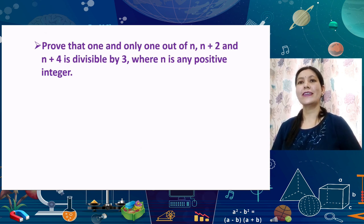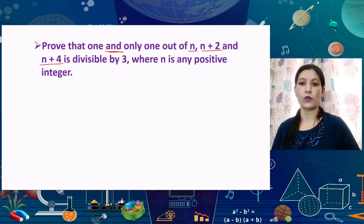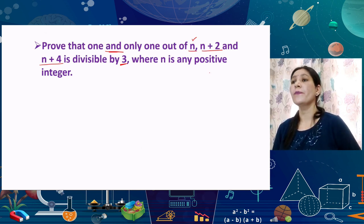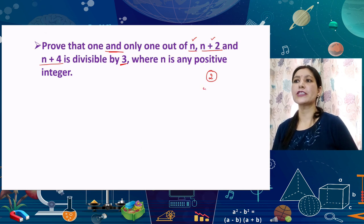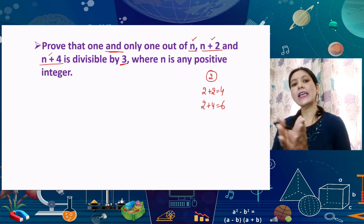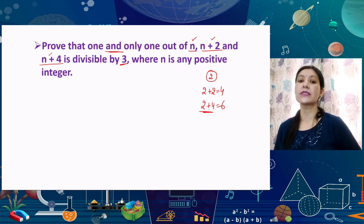The question is: prove that one and only one out of the numbers N, N+2, and N+4 is divisible by 3. Let us first see an example: if N = 2, then N+2 = 4 and N+4 = 6. Clearly, only one number — N+4, which is 6 — is divisible by 3. Similarly if N = 5, then N = 5, N+2 = 7, N+4 = 9 — again only one is divisible by 3.